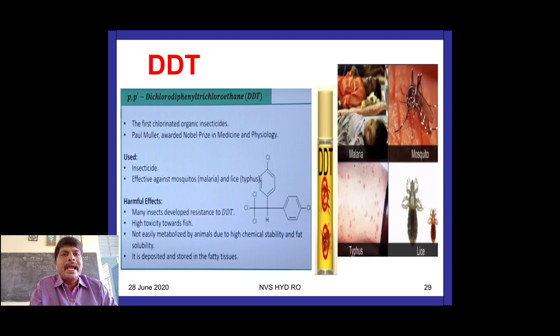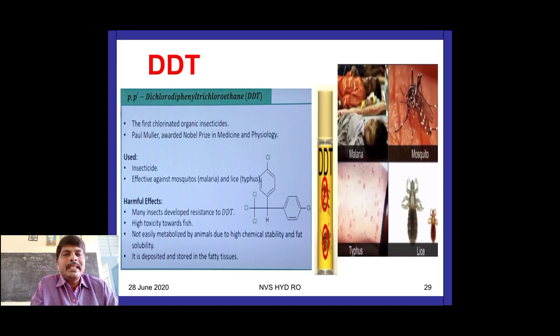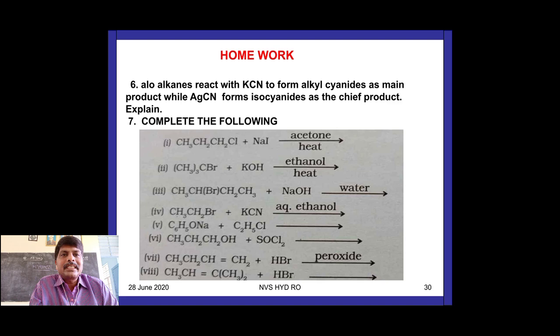Finally: DDT — dichlorodiphenyltrichloroethane (p,p'-DDT). D stands for dichloro, the second D for diphenyl, and T for trichloro ethane. It was the first chlorinated organic insecticide; today it is banned in many countries. It is effective against mosquitoes causing malaria and lice. Many insects developed resistance to DDT. It is highly toxic to non-target species, not easily metabolized by animals; due to high chemical stability and fat solubility it is deposited and stored in fatty tissues.